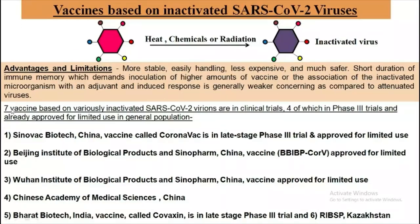In the case of SARS-CoV-2, seven vaccines based on various inactivated variants are in clinical trials. Four of these are in Phase 3 trials and are already approved for limited use in the general population. These four are: CoronaVac, BBV-Corvi, the Wuhan Institute of Biological Products and Sinopharm (China) vaccine approved for limited use, and Covaxin from India — which is also an inactivated vaccine and will be discussed in the next video.